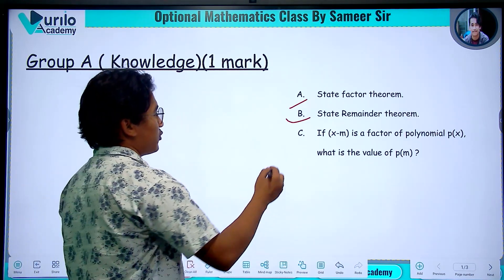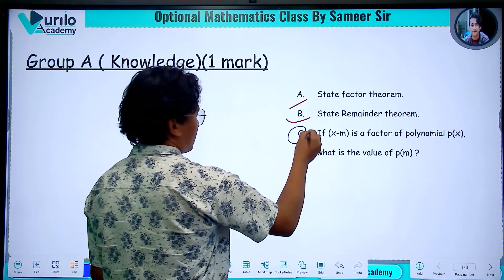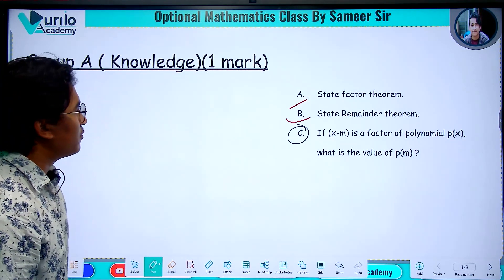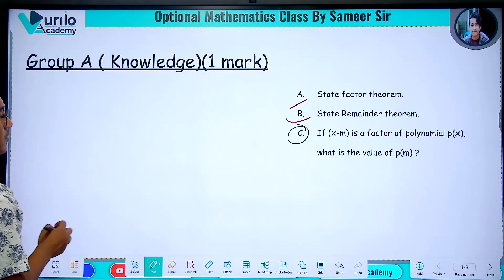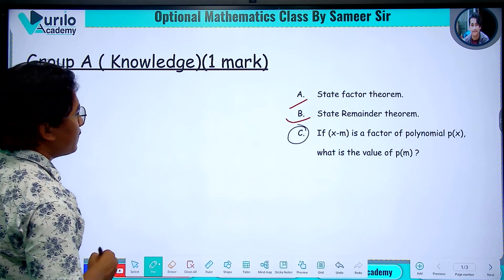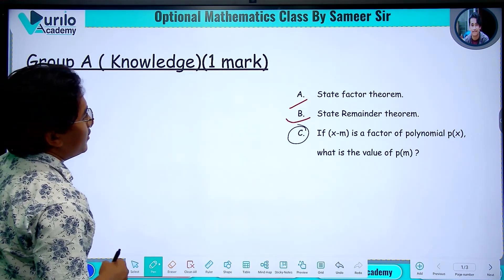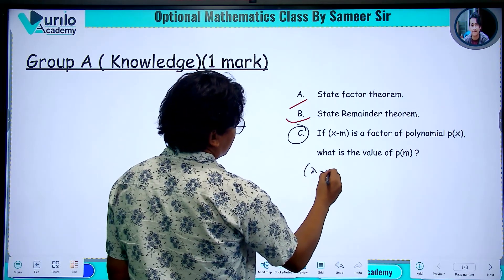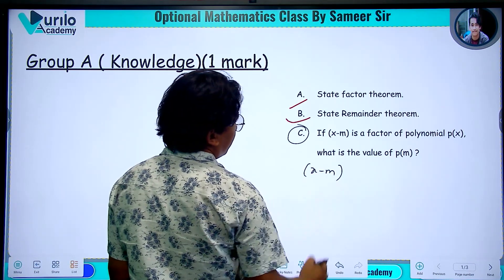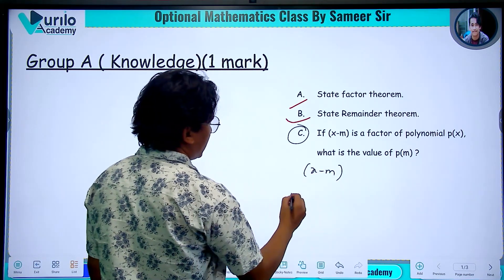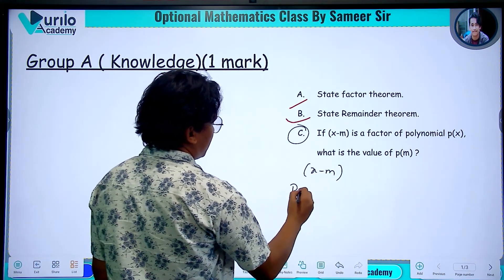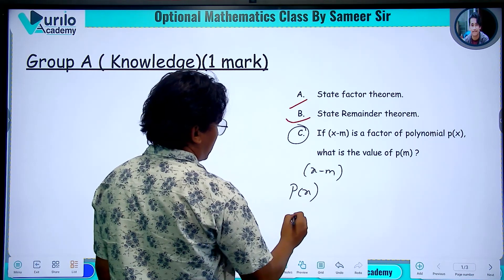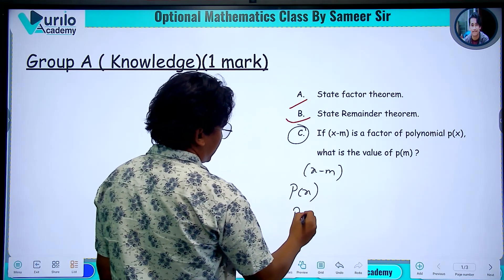Now, let's see the question. Srimi, what is the theorem? If x minus m is a factor of polynomial p of x, what is the value of p of m?